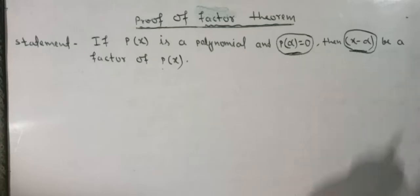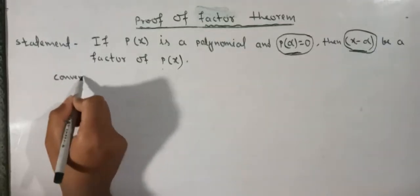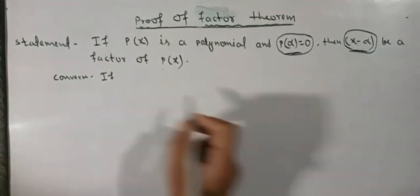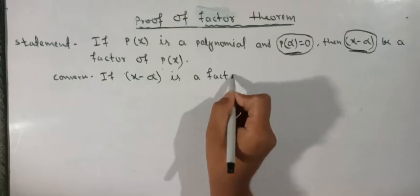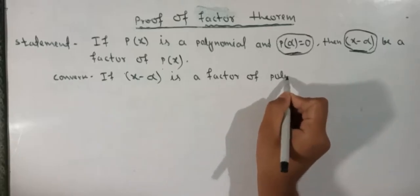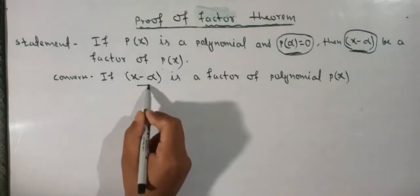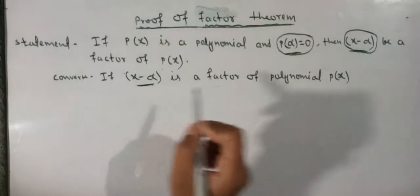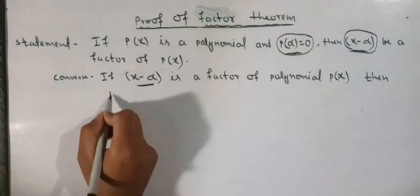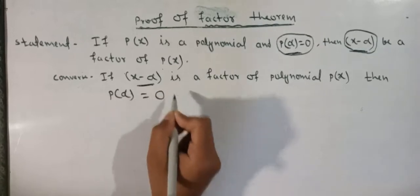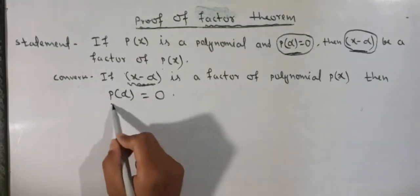x minus alpha is a factor of polynomial px. If x minus alpha is a factor, we have to prove that p(alpha) equals 0. So we take as given: x minus alpha is a factor of polynomial px, then p(alpha) equals 0. In this part, it is given and it is to be proved.